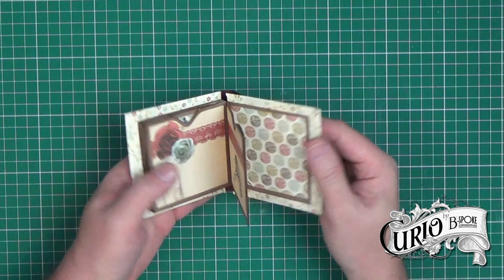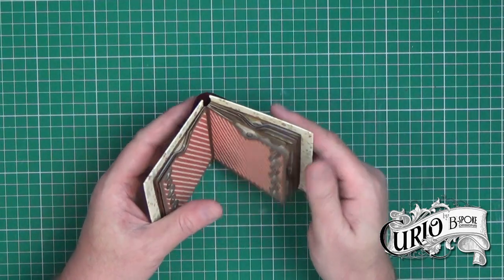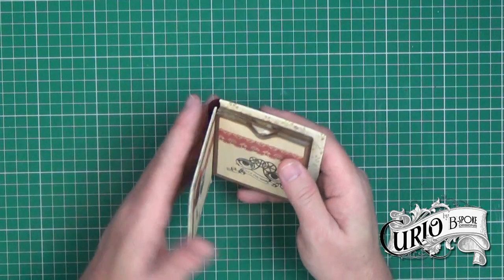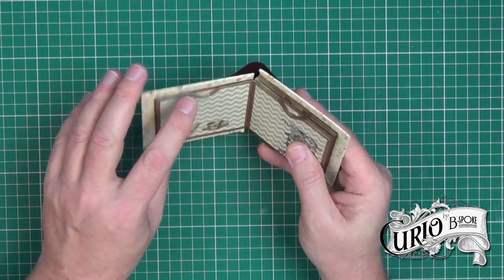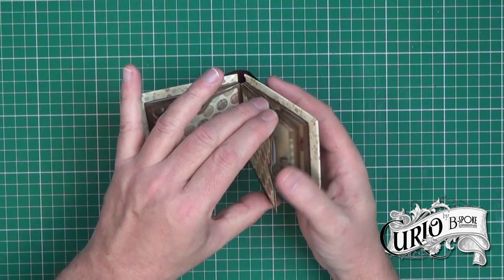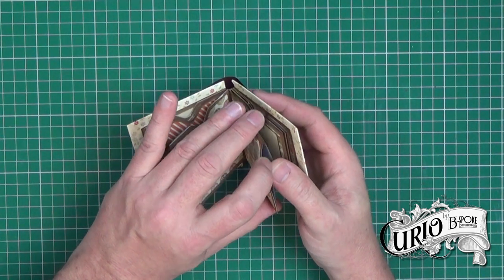So that's our finished book. The only thing that remains to do now is to make the inserts or tags to go in the pockets. Because of the way some of these pockets were formed were different to others, we'll need different size tags to go in those.